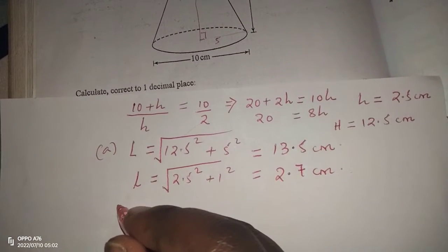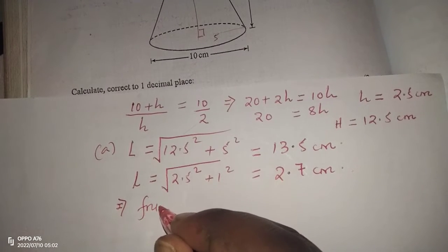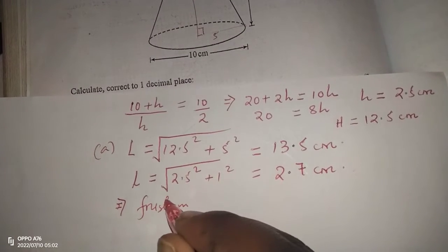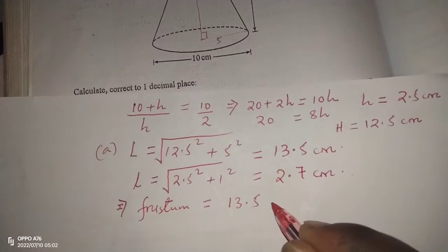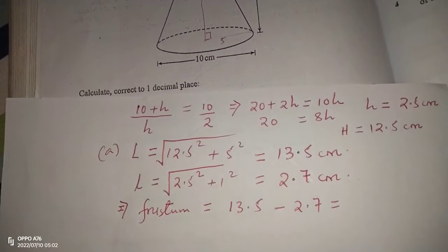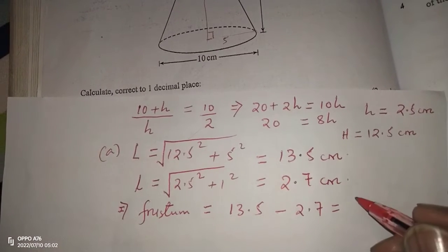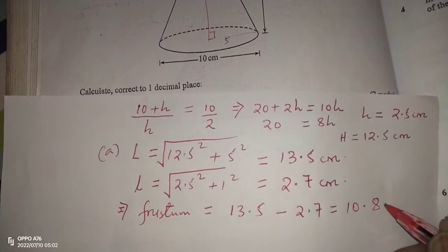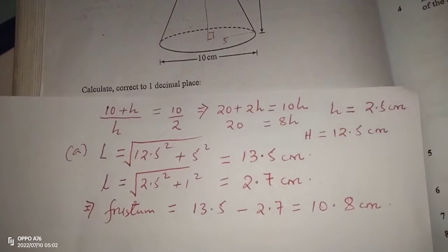The slant height of the frustum is found by subtracting the small slant height from the original slant height: 13.5 − 2.7 = 10.8 centimeters. This is part A of the question.